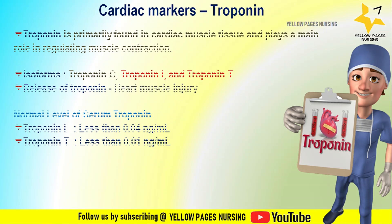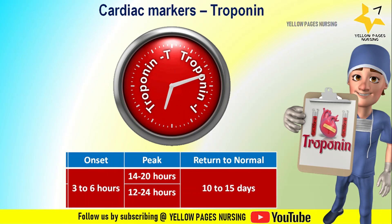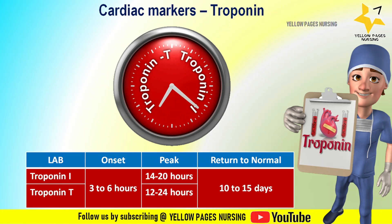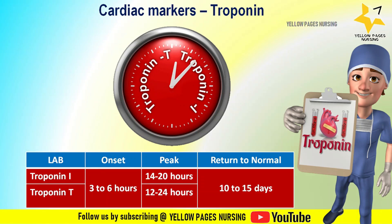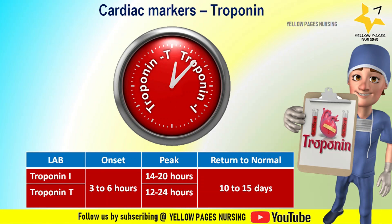Troponin release into the bloodstream typically starts within a few hours after the onset of heart muscle damage and continues for several days. Troponin levels generally rise within 3 to 6 hours after myocardial damage. Troponin I peaks at 14 to 20 hours with a return to baseline in 5 to 7 days, whereas troponin T peaks at 12 to 24 hours with a return to baseline in 10 to 15 days.